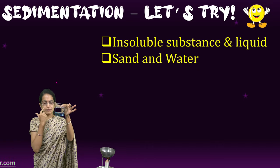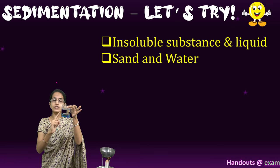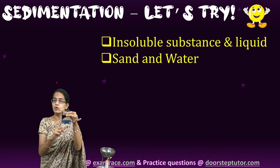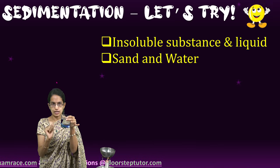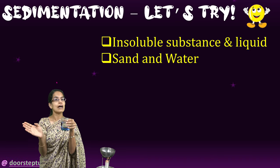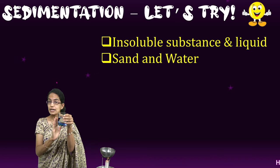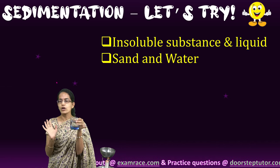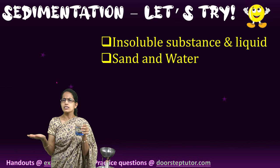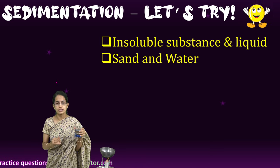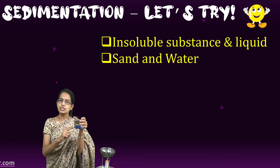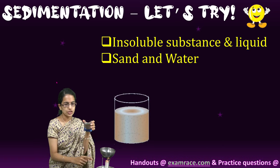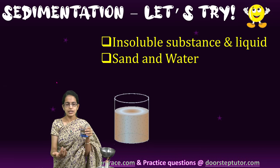Now, how do we separate this? The concept is simple: insoluble things move towards the bottom, soluble things dissolve. For example, if I pour salt into it, the salt dissolves and we get clear water. To separate salt from water, we need a separate process. Here, we are separating an insoluble substance from a soluble one, so the process is very simple. We can say this is a good method for separating solids from liquids — solids settle down, liquids float — and this is sedimentation.